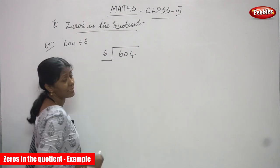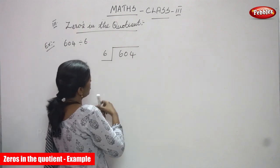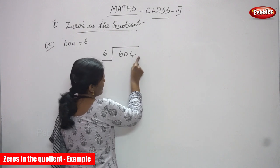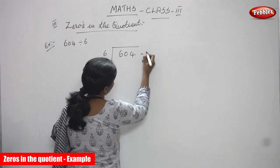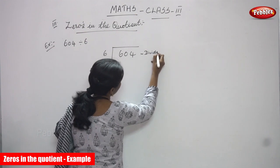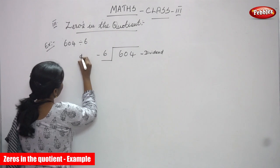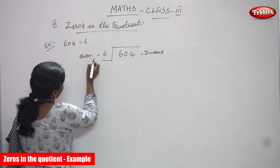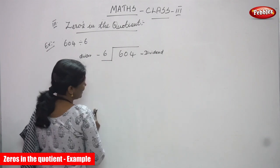604 is going to be divided by 6. So first, what are you going to do? This is a dividend and this is a divisor. D-I-V-I-D-E-N-D — dividend. And this is the divisor. So 604 is going to be divided by 6.